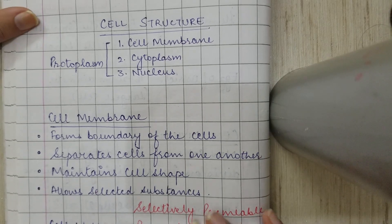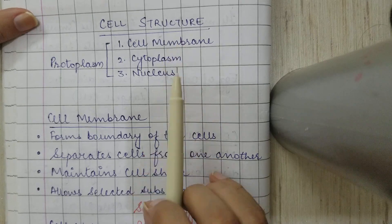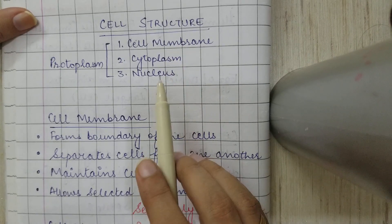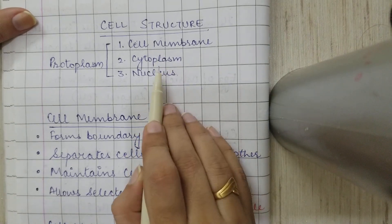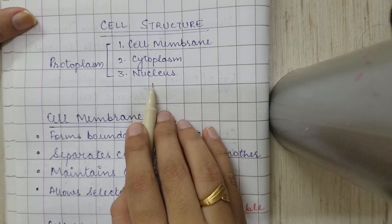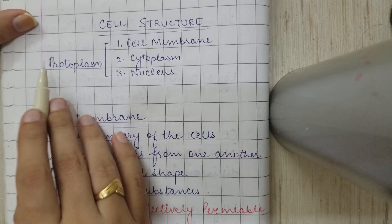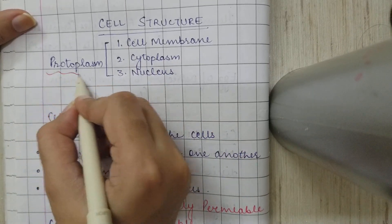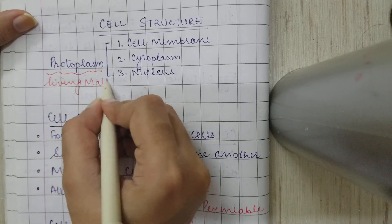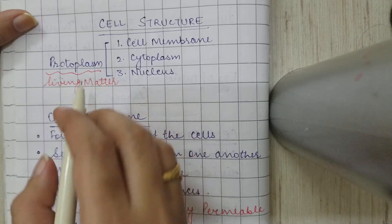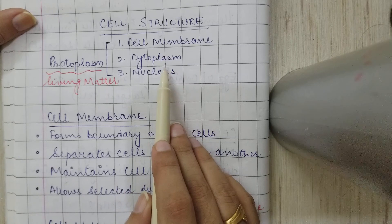Today we'll study about the cell structure. A typical cell is formed of three basic parts: cell membrane, cytoplasm, and the nucleus. These three structures form the protoplasm. Protoplasm is the living matter of the cell, and it includes the cell membrane, cytoplasm, and the nucleus.